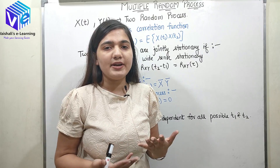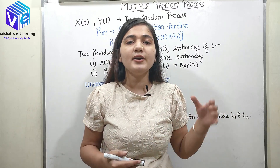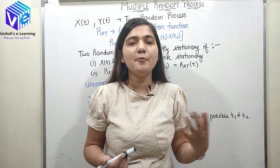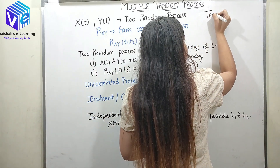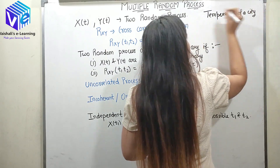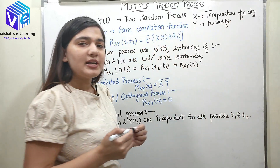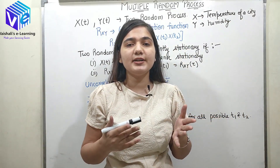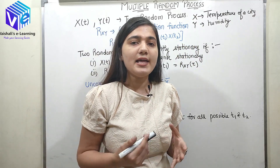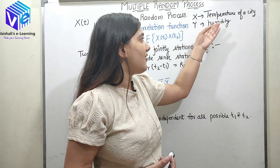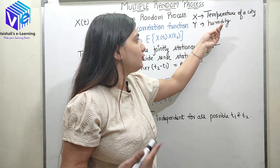I gave you an example: how many people are watching a video at a particular instant of time — that is one random process. The next random process could be how many people are liking it. Another example: X(t) represents the temperature of a city and Y(t) represents the humidity of the city. The temperature and humidity are both functions of time and are different at different instants of time, so X and Y are two random processes — this is called a multiple random process system defined on the continuous variable time.